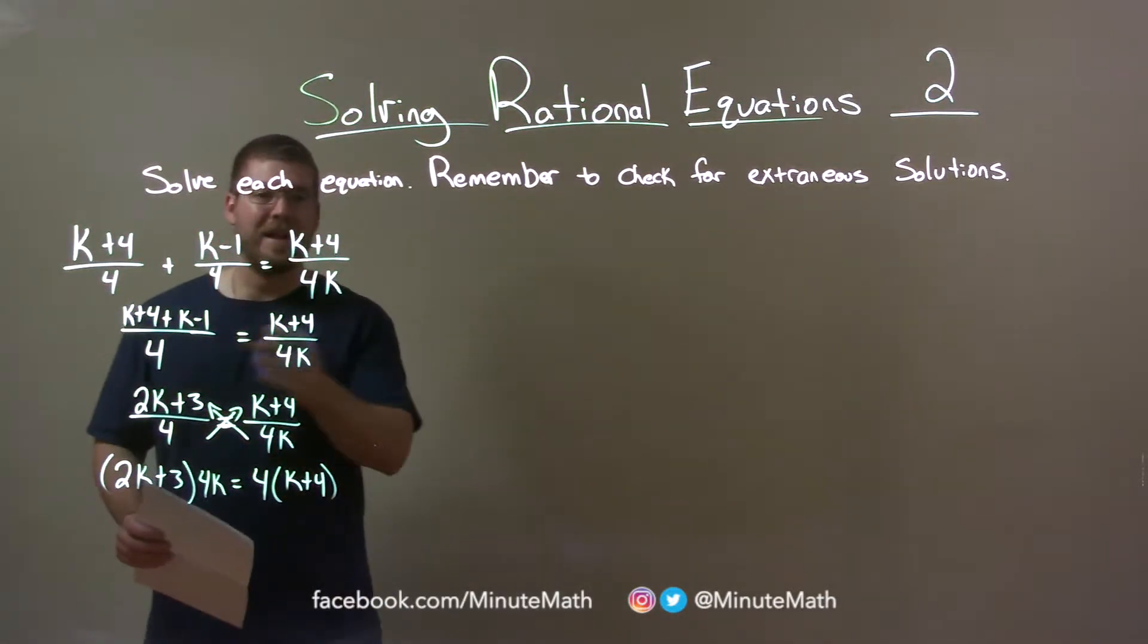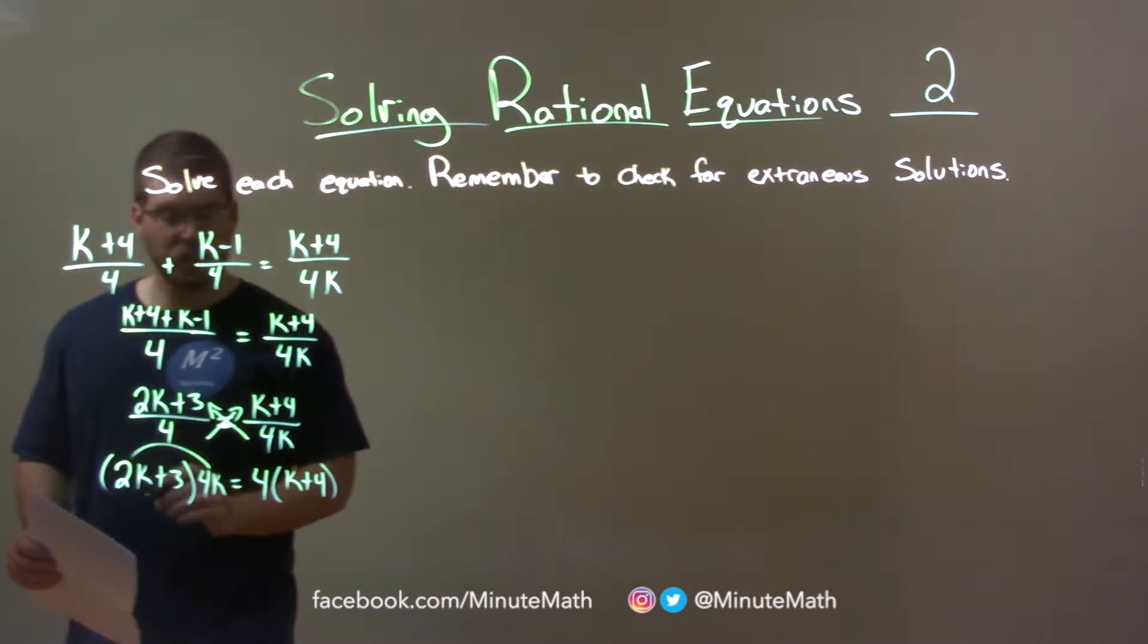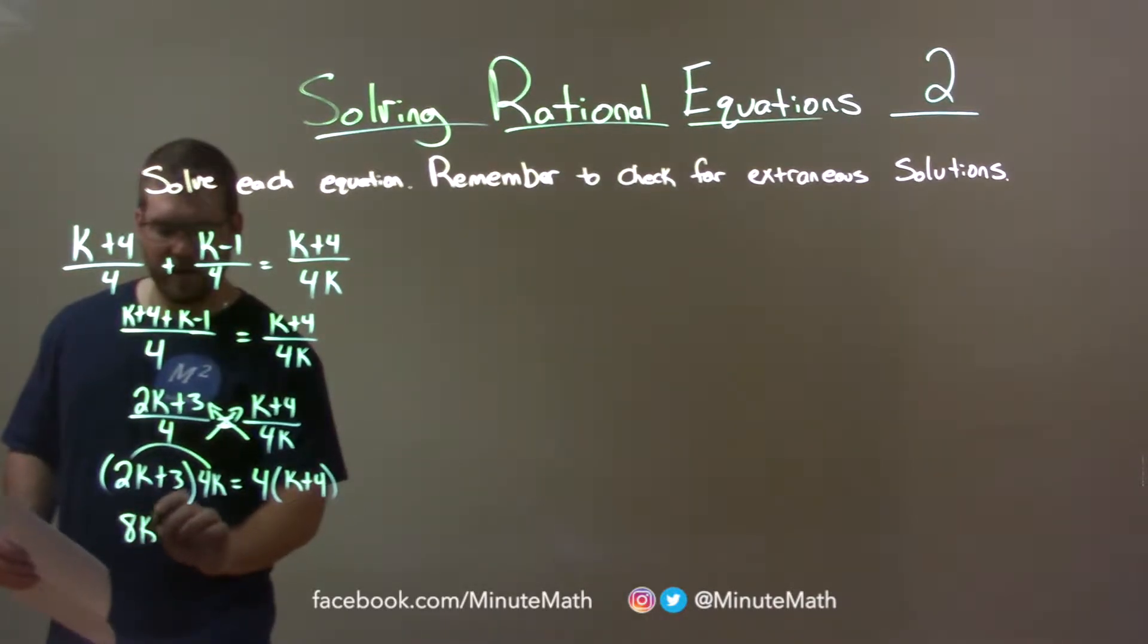When we do that we have 2k plus 3 times 4k and that's equal to 4 times k plus 4. So now let's multiply this out, distribute. 4k needs to be multiplied by the 2k and 4 times 2 is 8. So we have 8k squared.